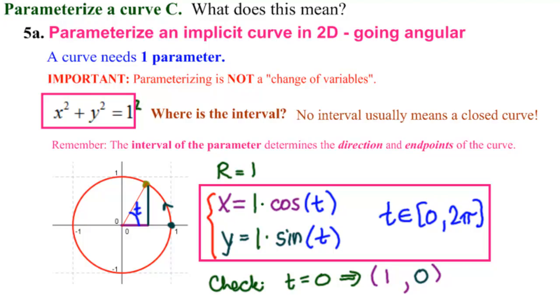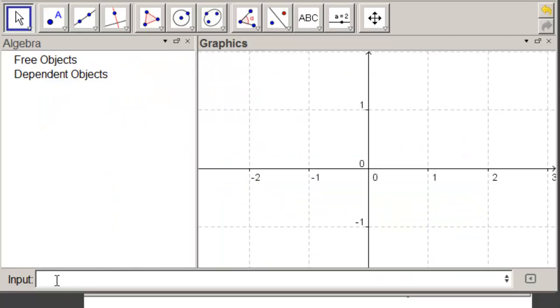Let's see this in GeoGebra. So the first thing we do is come down to the input bar. Click in there and input our implicit function. GeoGebra now takes implicit function. So x squared plus y squared equals 1.